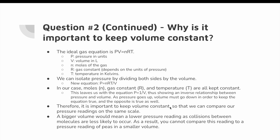Why is it important to keep volume constant? From the ideal gas equation PV = NRT — where P is pressure, V is volume, N is moles of gas, R is the gas constant, and T is temperature in Kelvin — we can isolate pressure by dividing both sides by volume, giving us P = NRT/V. In our case, moles, gas constant, and temperature are all kept constant, giving us the equation P = 1/V, which shows an inverse relationship between pressure and volume. As pressure goes up, volume must go down to keep the equation true, and vice versa.